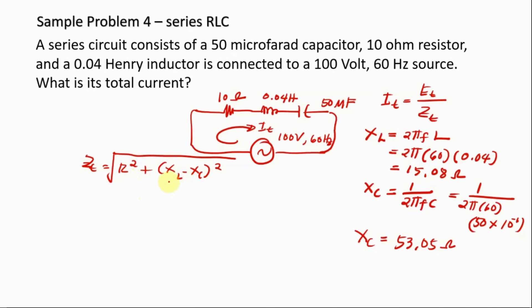Now you just substitute the values. So again, I am writing it. For R you have 10 ohm, that is squared, plus X sub L which is 15.08 minus 53.05. The result of the subtraction is you squared, then you get the square root. Press your calculator, Z_T will be found out to be 39.26 ohms.